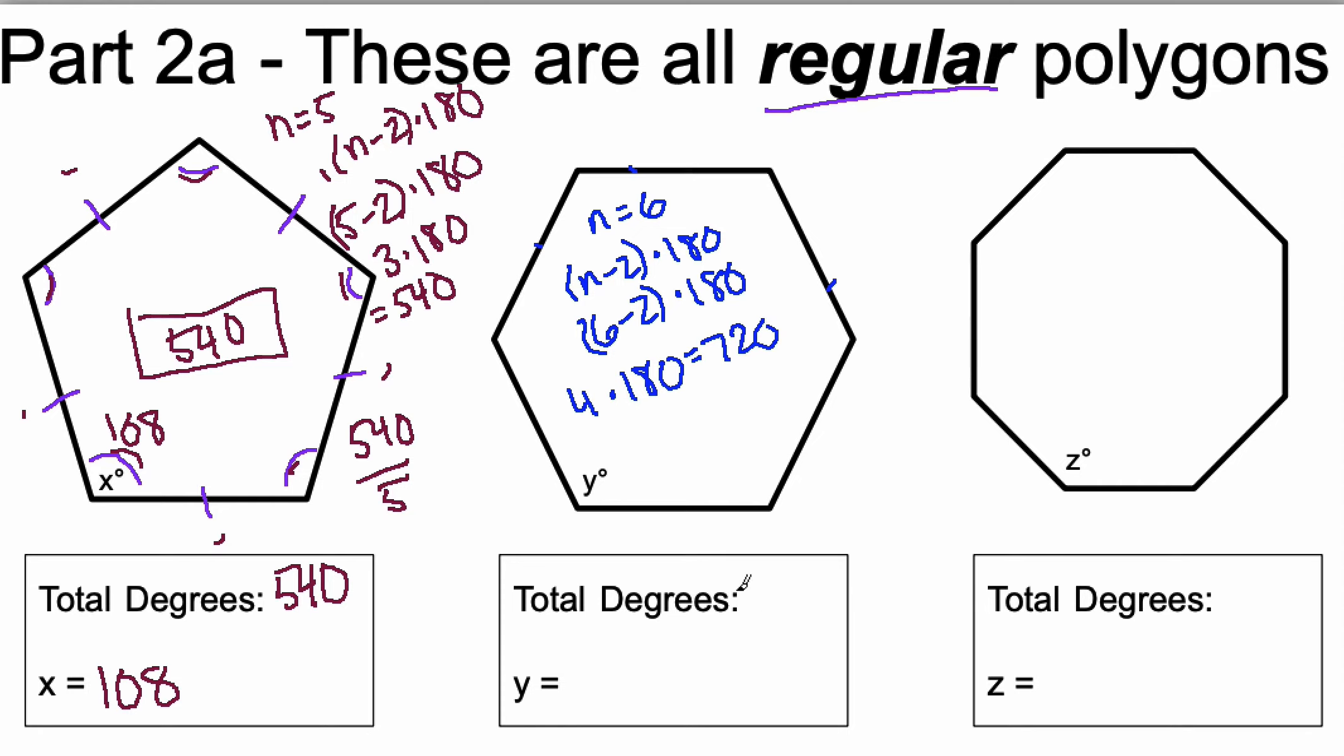So I know that there's a total of 720 degrees inside this hexagon but I need to divide it by 7 equal angles. Excuse me, 6 equal angles. So 720 divided by 6 is equal to 120 degrees. So y is equal to 120.